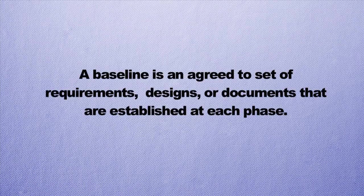In the NASA System Engineering Handbook, there's extensive information about what level of maturity you should be at each review, so engineers know what products are required and what level of fidelity is needed. Along the way, as you're developing a system through this life cycle, baselines are developed. Baselines are an agreed-to set of requirements, designs, or documents established at each phase, allowing the entire team to work from a common set of requirements or design drawings, controlled to ensure a shared understanding.